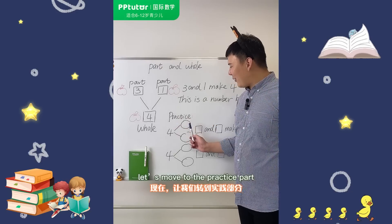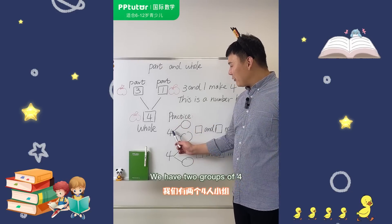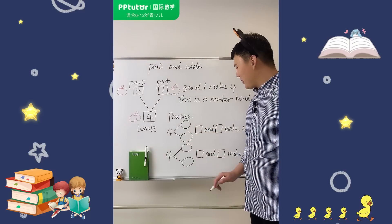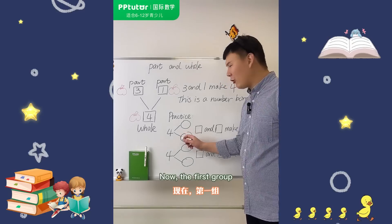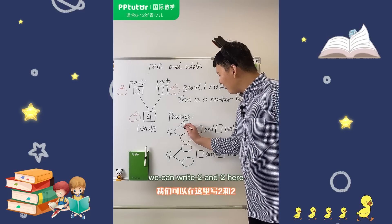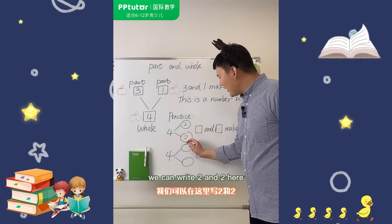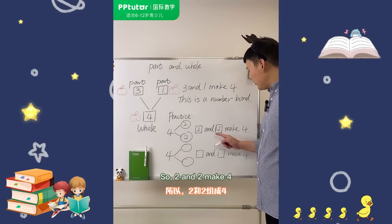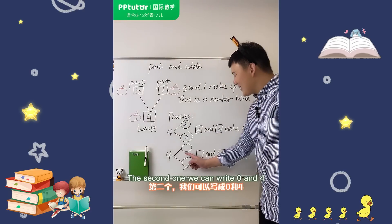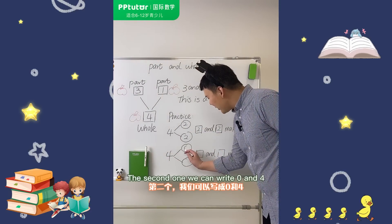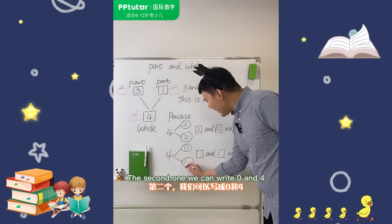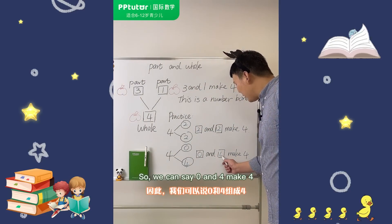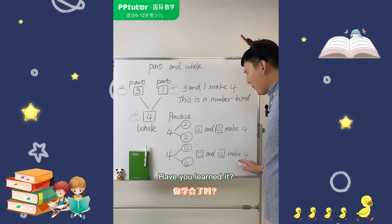Now let's move to the practice part. We have two groups of four. We're going to fill in the box and the circles. For the first group, we can write two and two here. So two and two make four. For the second one, we can write zero and four. So we can say zero and four make four.